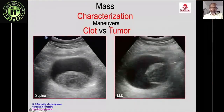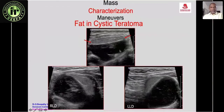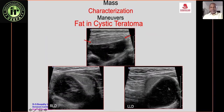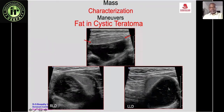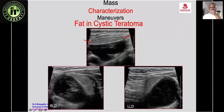Positional maneuvers help characterize a mass. In a patient with hematuria, a mass that shifts with position change is a clot. In a woman with a lower abdominal mass, the solid-appearing mass anteriorly also shifts with position change — only fat floats on fluid, so this is fat, bringing the diagnosis to cystic teratoma.